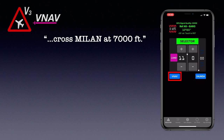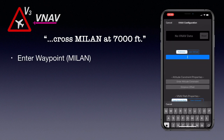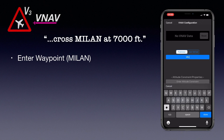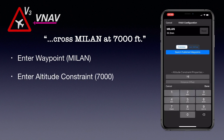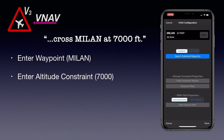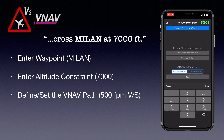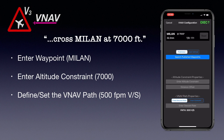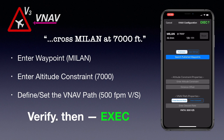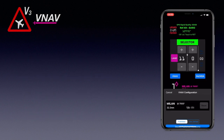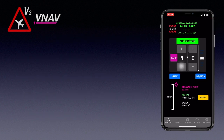Tap on the VNAV button and then enter Mylan as the waypoint. Enter 7,000 as the altitude constraint. Enter 500 feet per minute as the fixed descent rate. Verify the entries and execute if they're correct. Now set the altitude selector to 7,000 feet.